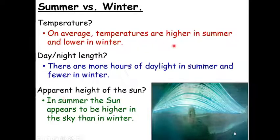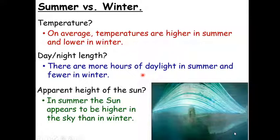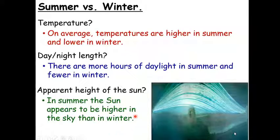Hopefully you've had a chance to think about these three things and make some notes. For temperature, on average temperatures are higher in the summer and a lot lower in the winter. For day and night length, in summertime we have more daylight hours because the sun rises earlier — the further into spring and summer, the earlier the sun rises. So we have more daylight hours and fewer hours of darkness compared to winter, where the nights are much longer. And in summer the sun appears higher in the sky compared to winter. Make sure you pause and note these down before moving on.